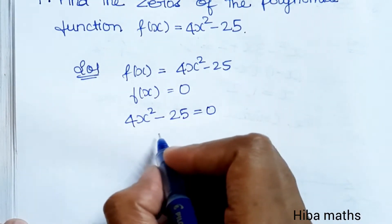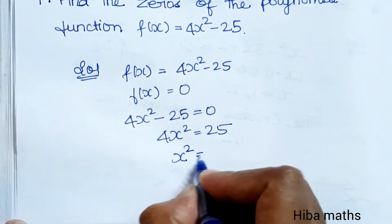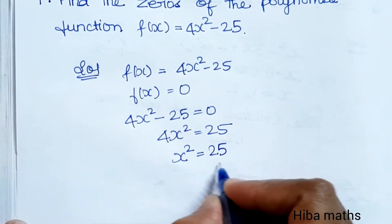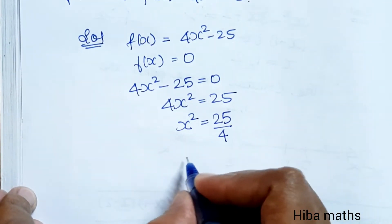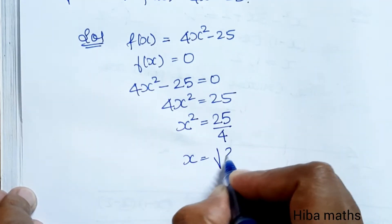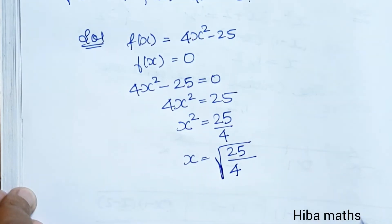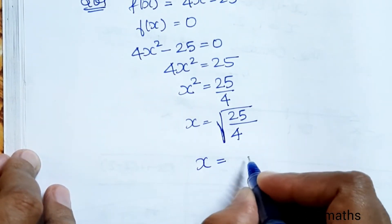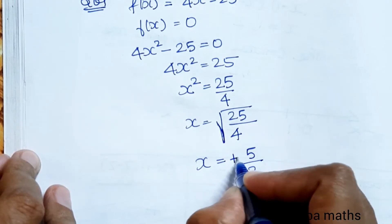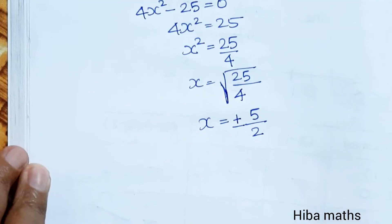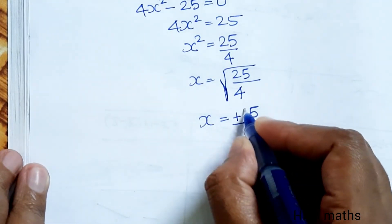Move minus 25 to the other side, it becomes plus 25. Then isolate x squared: x squared equals 25 divided by 4. Take the square root of both sides — the square root of 25 by 4. Now 25 is 5 squared and 4 is 2 squared, so we get plus or minus 5 by 2.